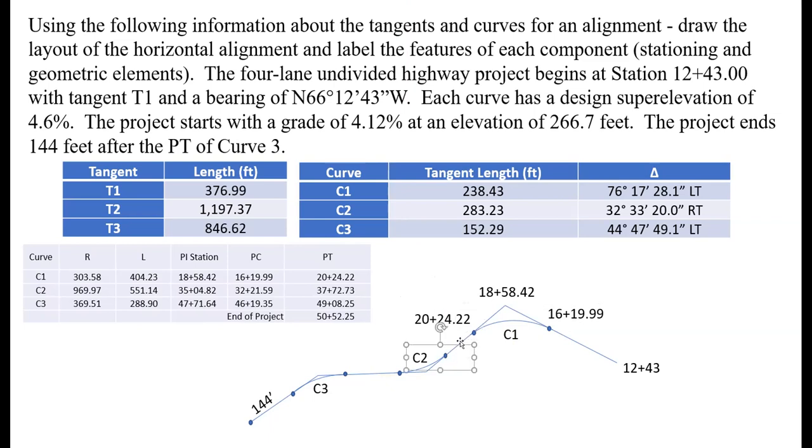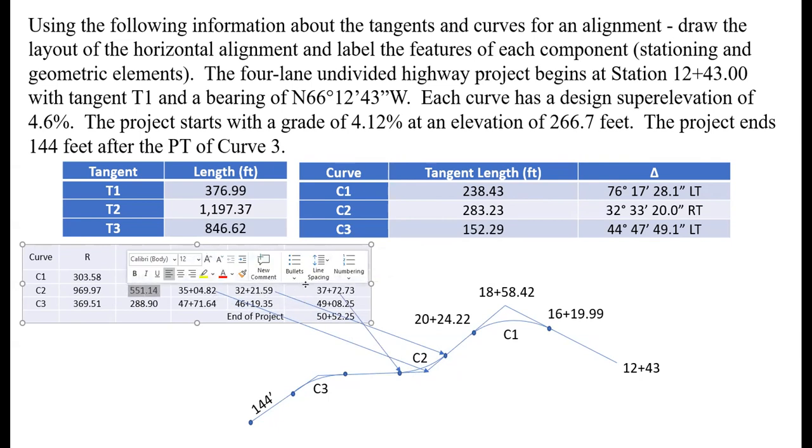Let me copy this table and bring it up beside our drawing so we can see this easier. At this point I'm going to delete out these tangent values because it's cluttering up a little bit here. We've got the PI, PC, and PT of curve one. This distance of 1197.37 will allow us to find the PC of curve two, which is 32+21.59. We can move along the tangent length of 283.23 to find the PI. Then the PT of curve two is 37+72.73 by adding the curve length 551.14 to the PC station.